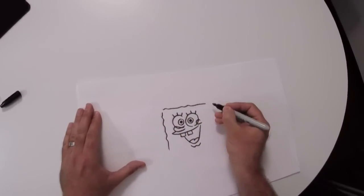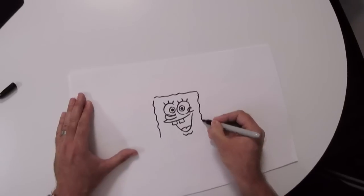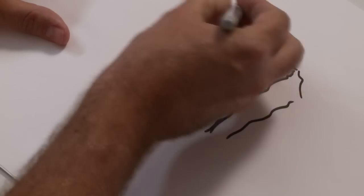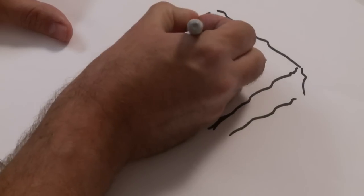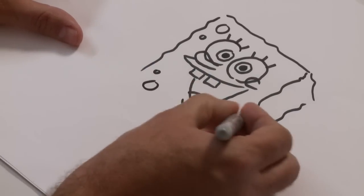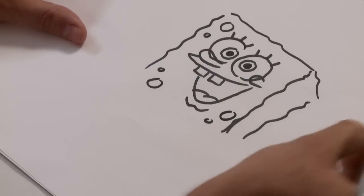Now that we have his main facial features, we'll do the shape around them. Next, we'll draw the big circle, little circle, little circle, big circle, little circle, big circle.